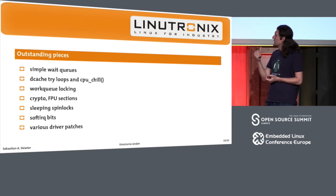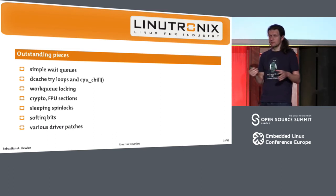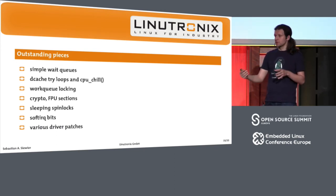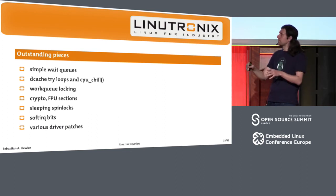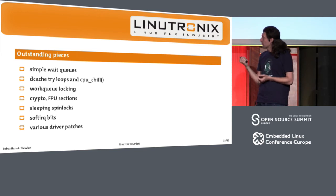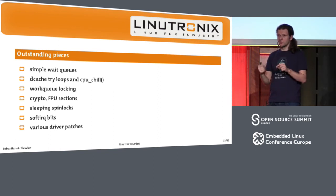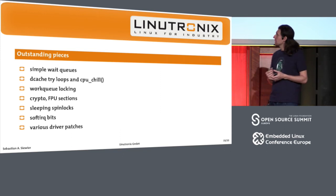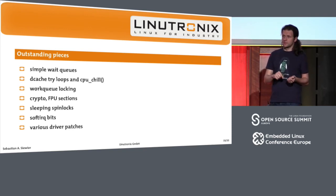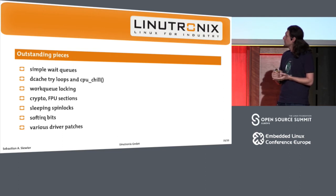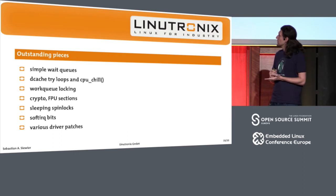We have a few patches for the workqueue implementation. The scheduler guys are happy about it because we get certain things out of the scheduler code, but the workqueue guys want to keep it in there. So this is mostly a matter of discussion and convincing. In the crypto code, we have a bunch of FPU sections — what it does is it takes a preempt-disabled section and does AES with AVX or SSE implementation. While doing the crypto algorithm, they are not preemptible, but we need to be preempted as often as possible. We have a bunch of preemption points to get that working, and I have a few ideas how to get that upstream.